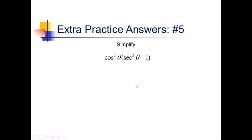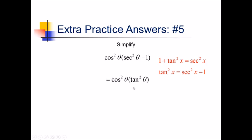To simplify this problem, we're going to start by thinking about Pythagorean identities. The secant squared minus 1 looks like I ought to be able to swap it out for something. I know that 1 plus tan squared equals secant squared, so secant squared minus 1 is the same as just tan squared. I can replace this whole parentheses with tan squared. Now, tan squared is really sine squared over cosine squared — the cosine squareds cancel, leaving us with a final answer of sine squared.